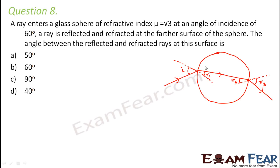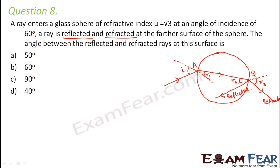The question says that at the farther surface both refraction and reflection take place. So the refracted ray exits, and the reflected ray bounces back. Some part gets refracted, some part gets reflected. We label the entry point as A and the far surface point as B.